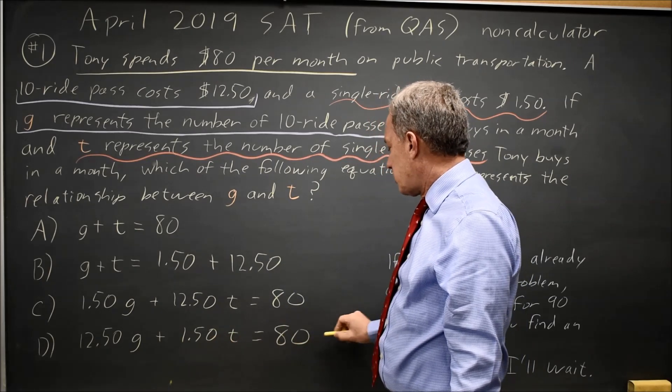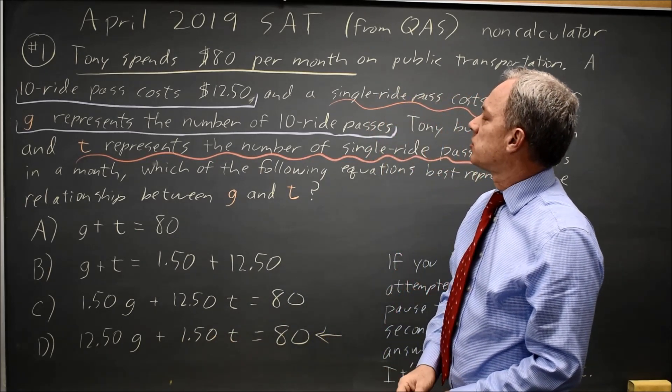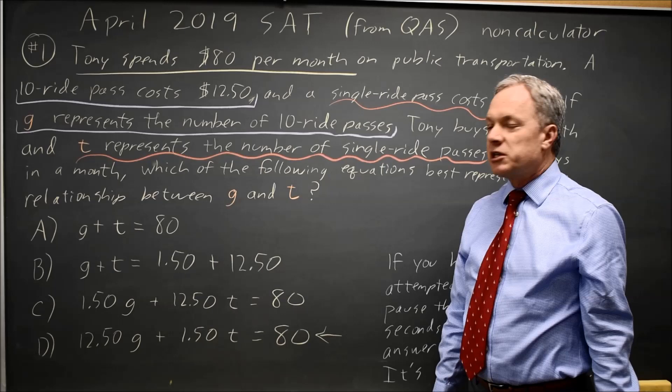So that's the total amount spent equals 80, the total amount that Tony spends. So D would be the correct answer.